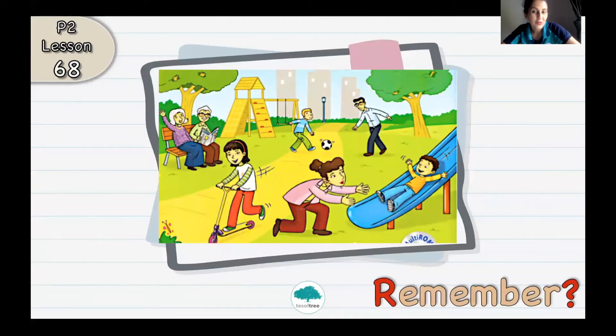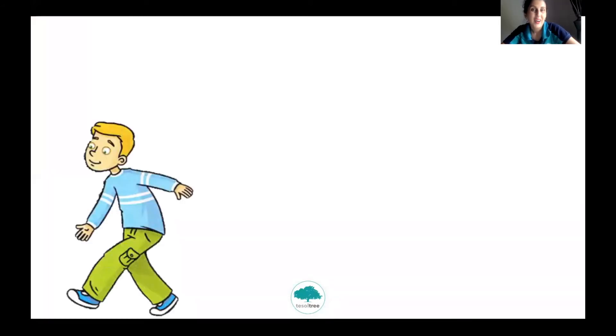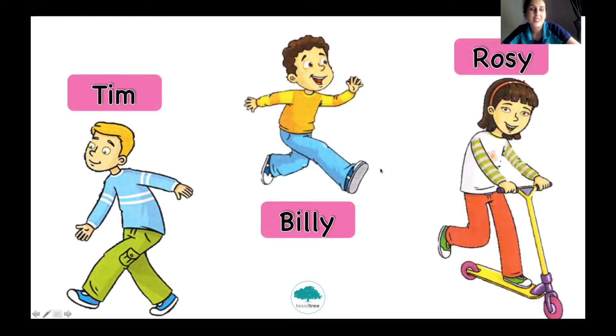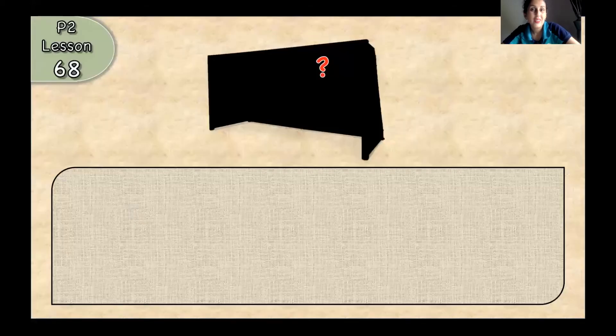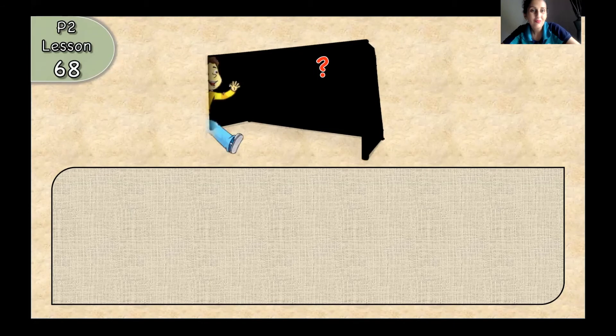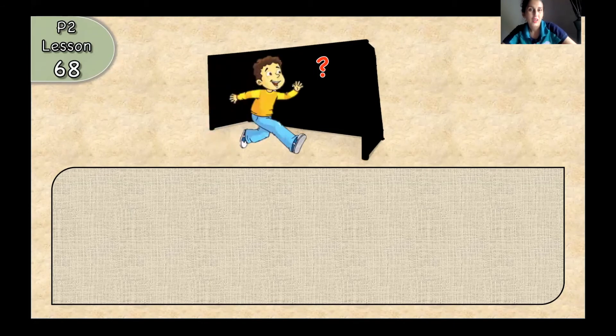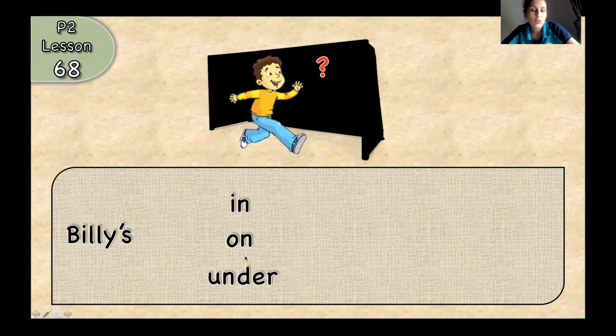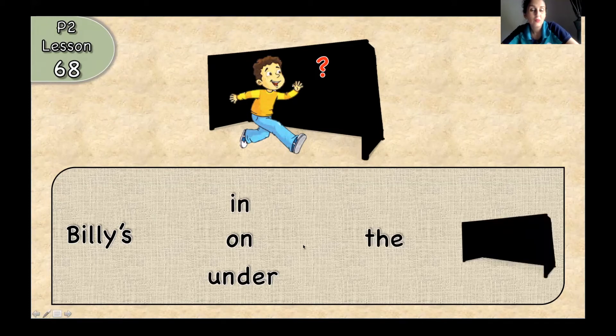And do you remember our characters from the class book? Let's have a look at the picture. I will introduce them one more time. This is Team, Billy and Rosie. Team, Billy and Rosie. And they are playing on the playground. You can see Billy and where is Billy. We have to make a sentence. Billy in, on, under, the, beep.